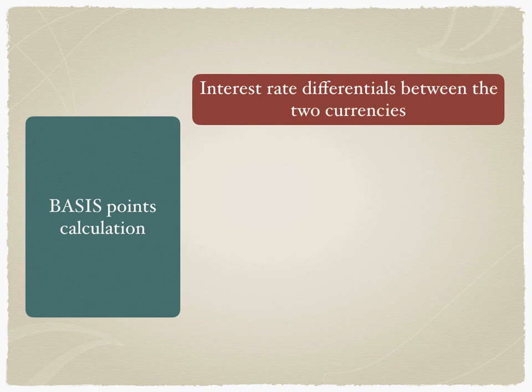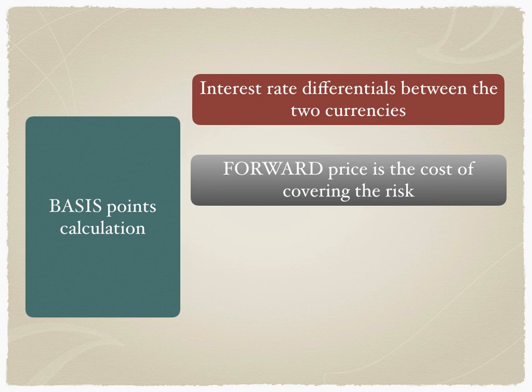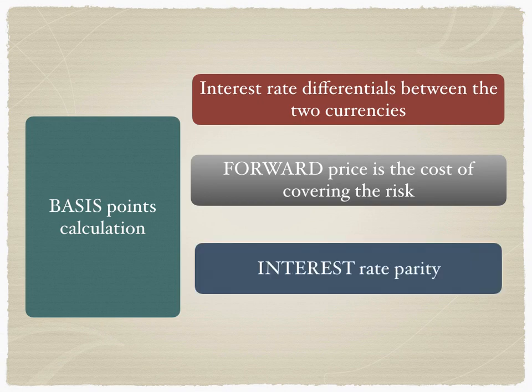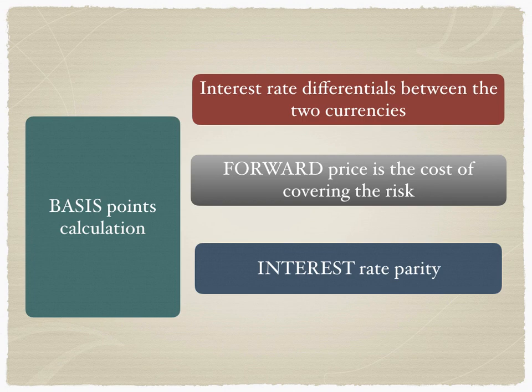The forward price is the cost of covering the risk, and this is called interest rate parity. As long as currencies have different interest rates, currencies will be quoted at a premium or at a discount in the forward market. From 2020 to 2022, interest rate differentials have been astronomical — currencies have been volatile, interest rates have been volatile, and forward basis points too have been volatile. The interest rate parity theory ensures there can be little or no arbitrage advantage to any of the hedgers in the forward exchange market.